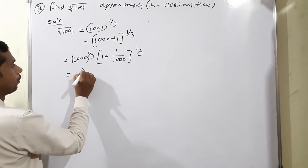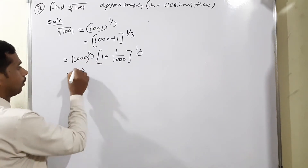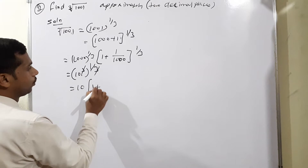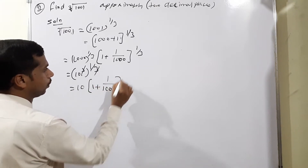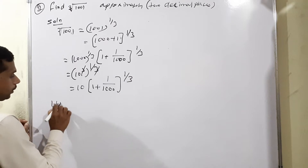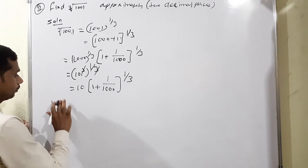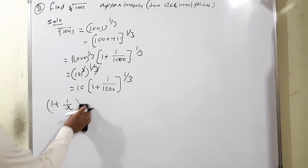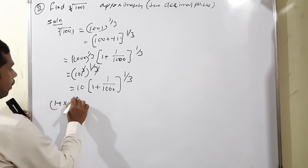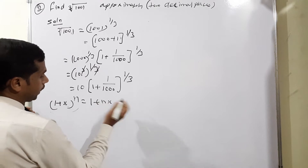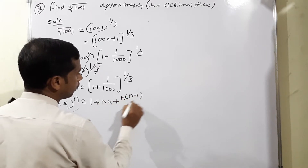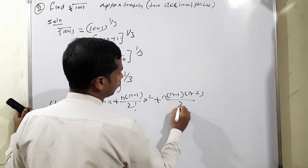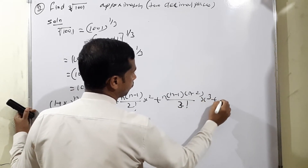Since 1000 = 10³, we have (10³)^(1/3) × (1 + 1/1000)^(1/3). The powers 3 and 1/3 cancel, giving 10 × (1 + 1/1000)^(1/3). Now we apply the binomial expansion formula: (1 + x)^n = 1 + nx + n(n-1)/(2!) × x² + n(n-1)(n-2)/(3!) × x³ + ...